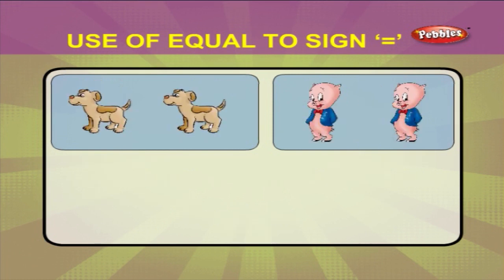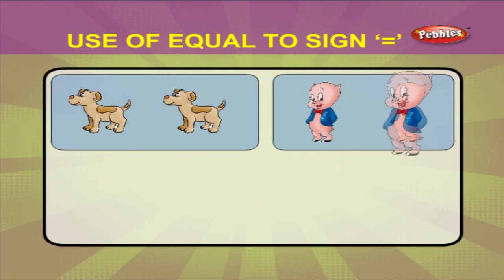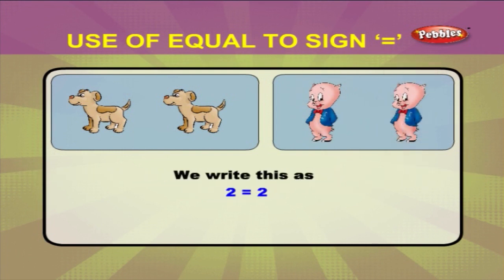See the next example. The number of dogs is 1, 2 and the number of pigs is also 1, 2. We write this as 2 is equal to 2.